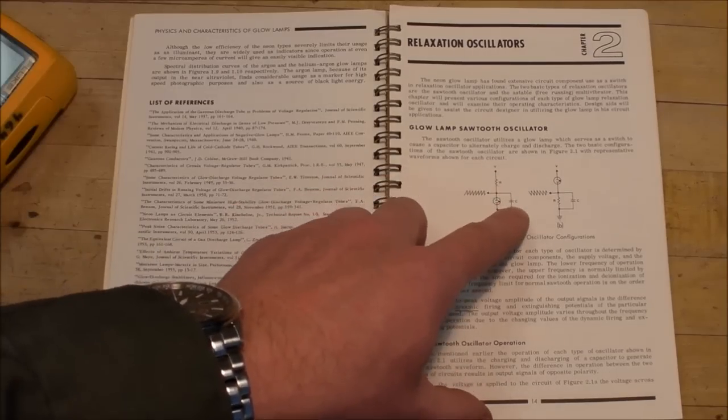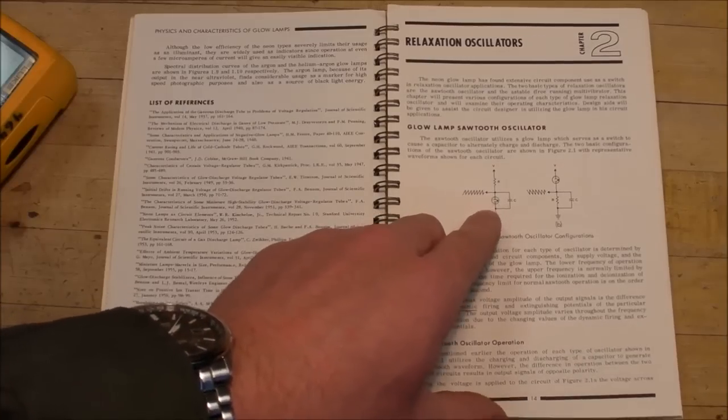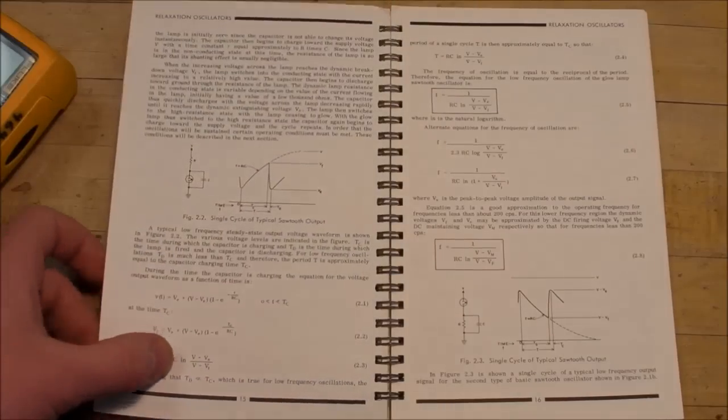This particular circuit is just a resistor, a capacitor and the neon lamp. It utilizes the negative resistance of the neon lamp in order to get some oscillation going.